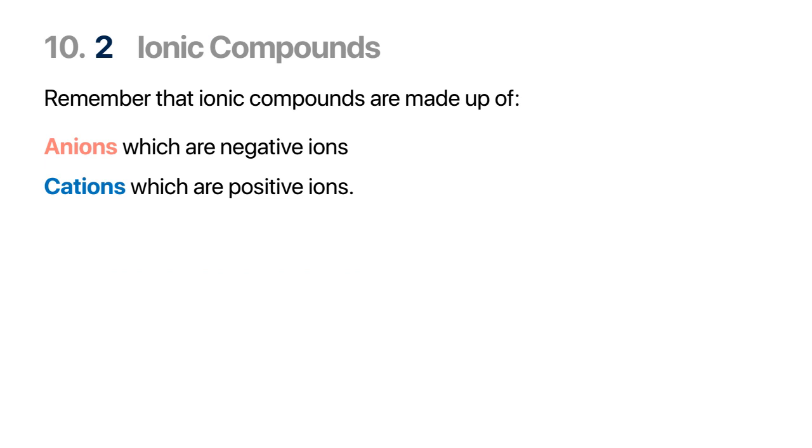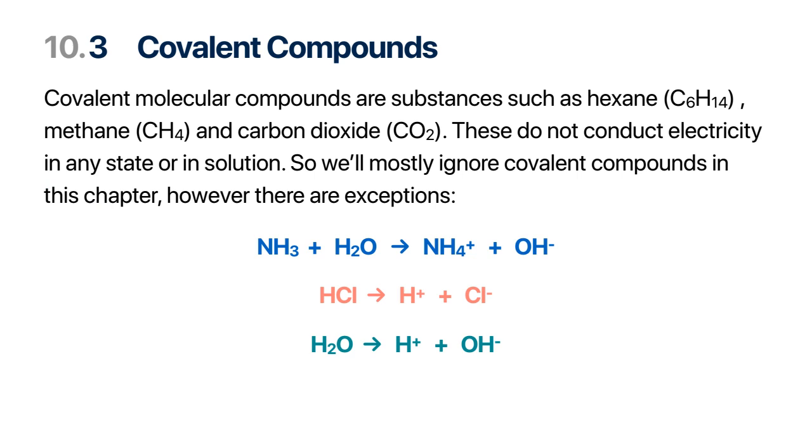Quick revision: anions are negative ions and cations are the positive ones. Certain covalent compounds are also known to ionize when they're dissolved in water. So ammonia NH3 added to water can ionize, turn into the ammonium ion and also produces OH negative. Hydrochloric acid HCl normally is a covalent compound and the gas dissolved in water will turn into H+ and chlorine ions.